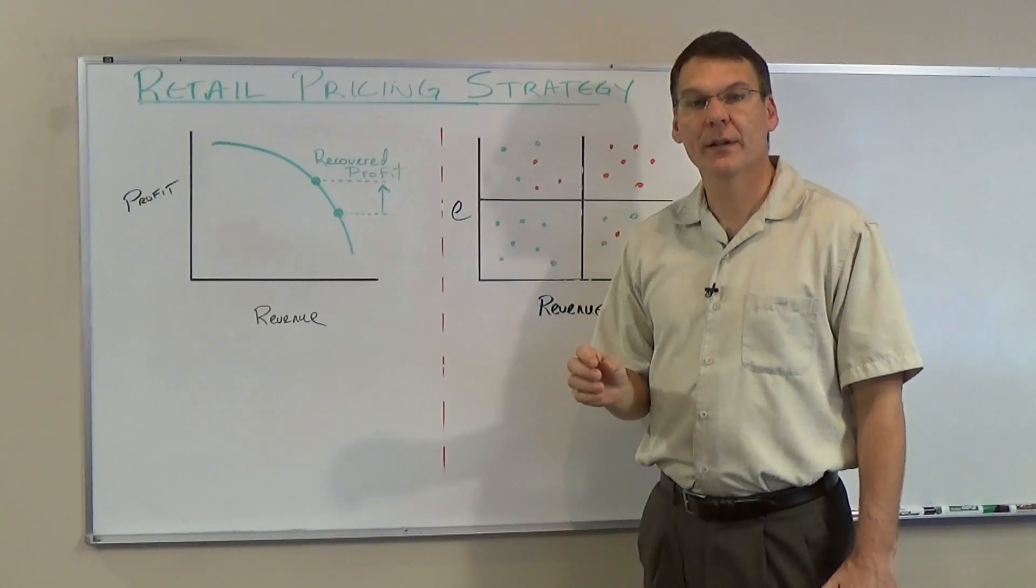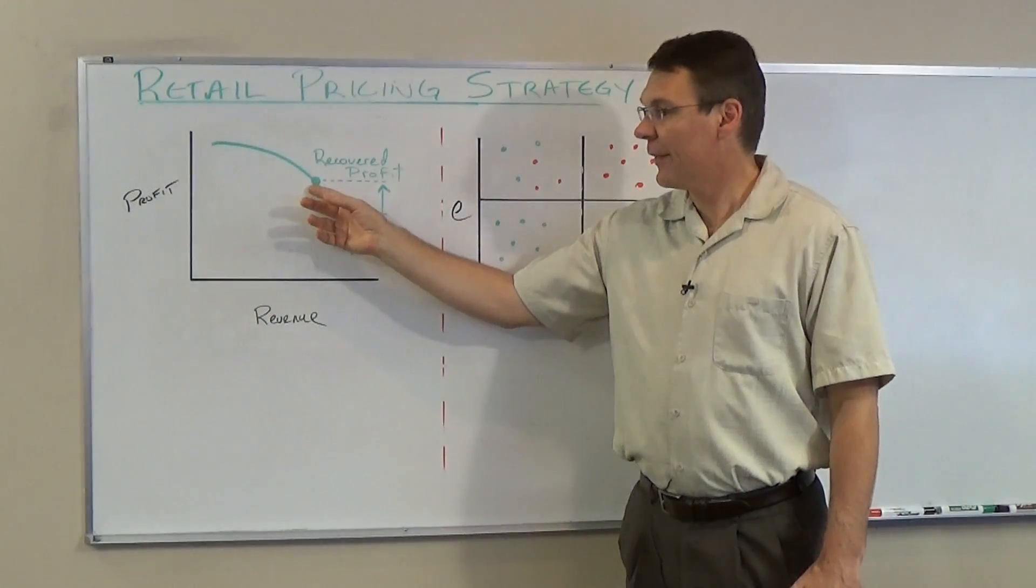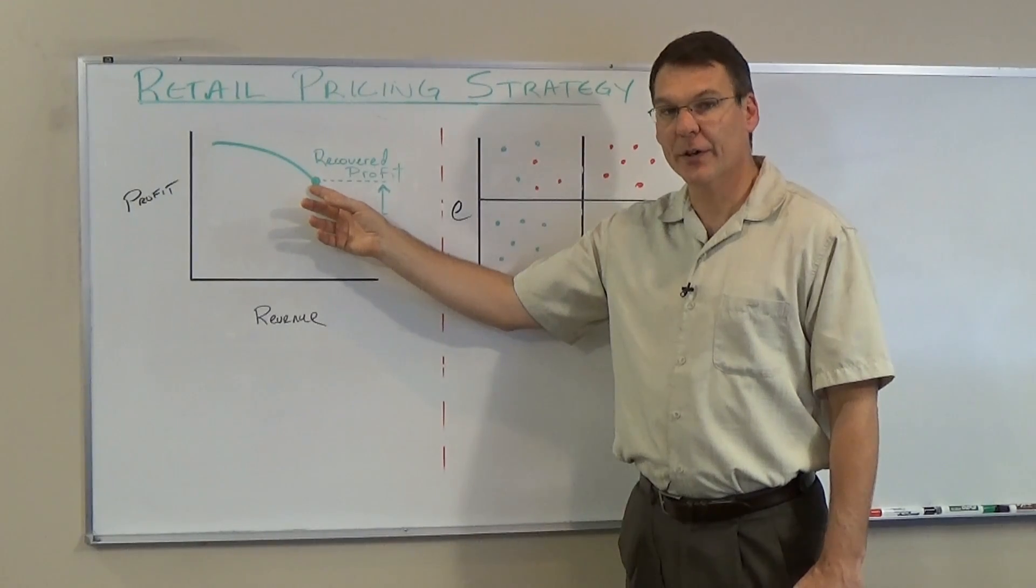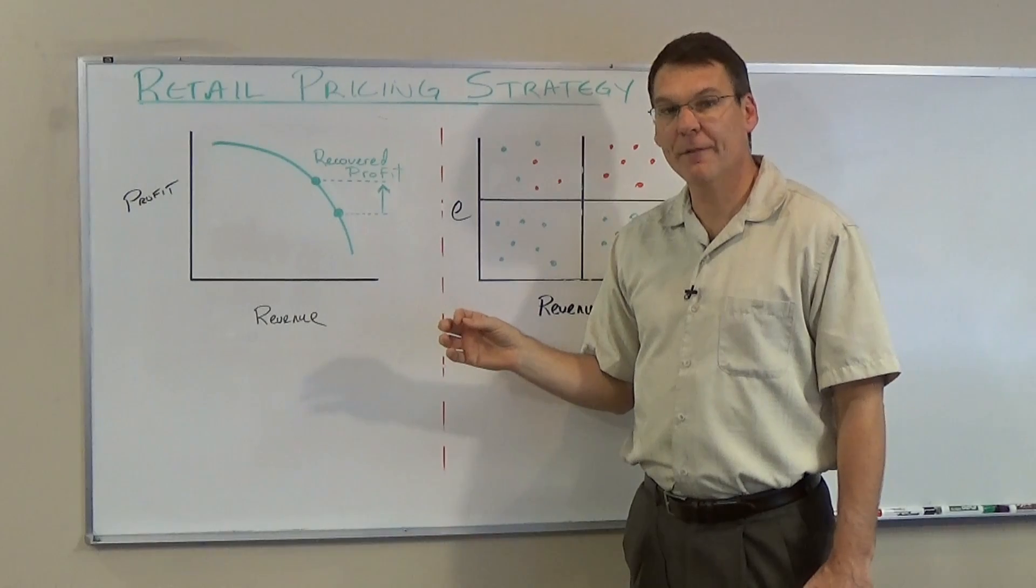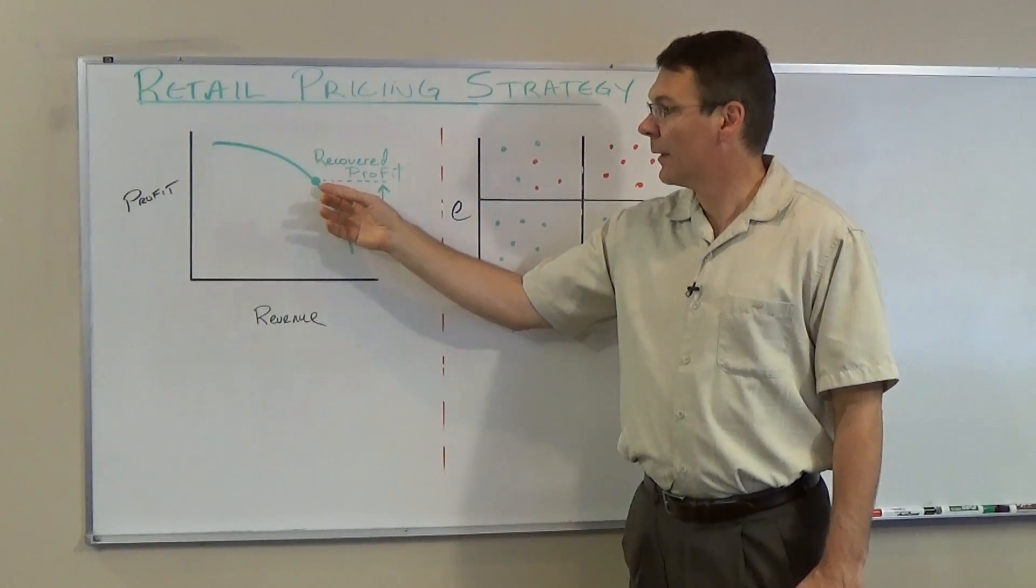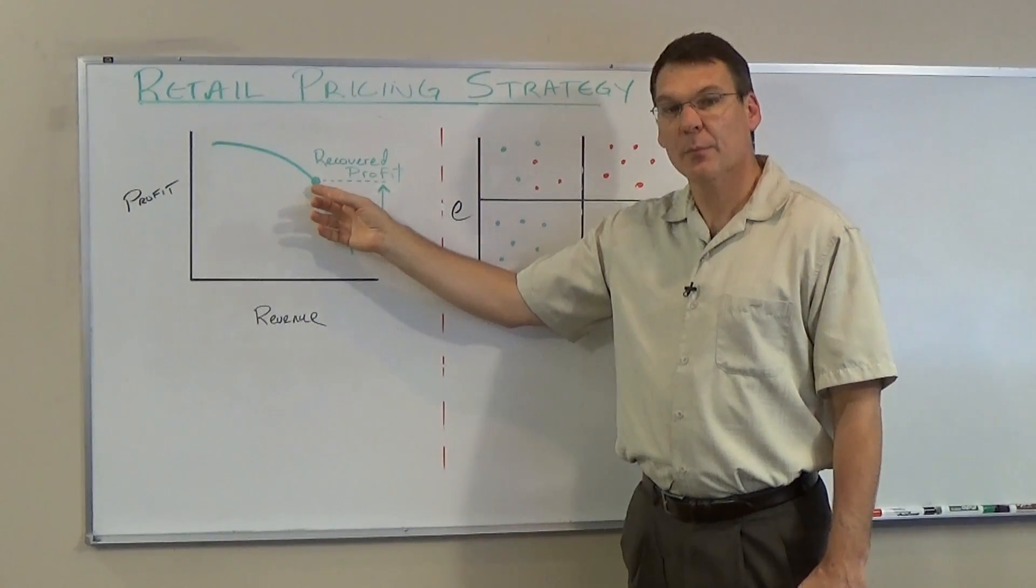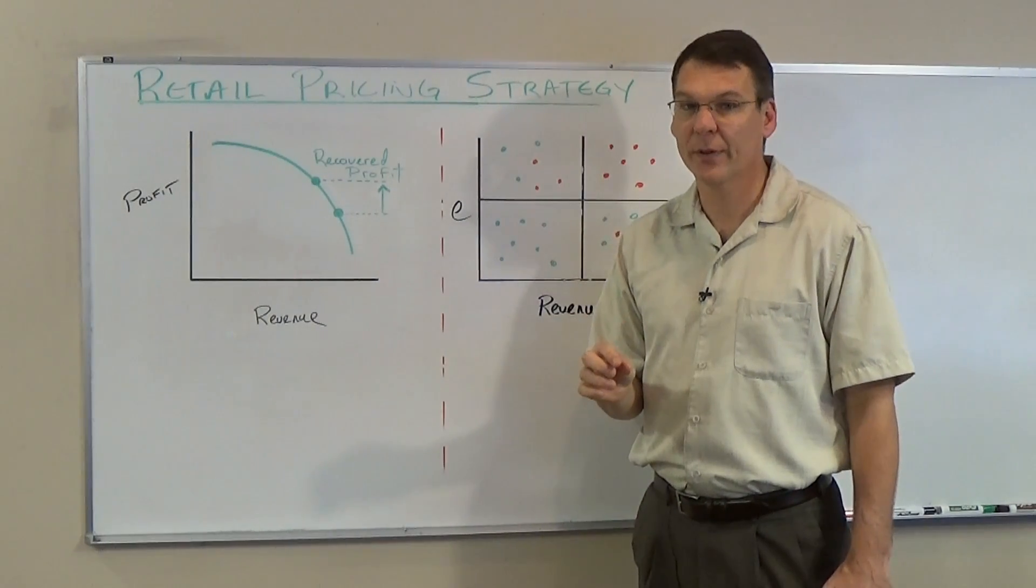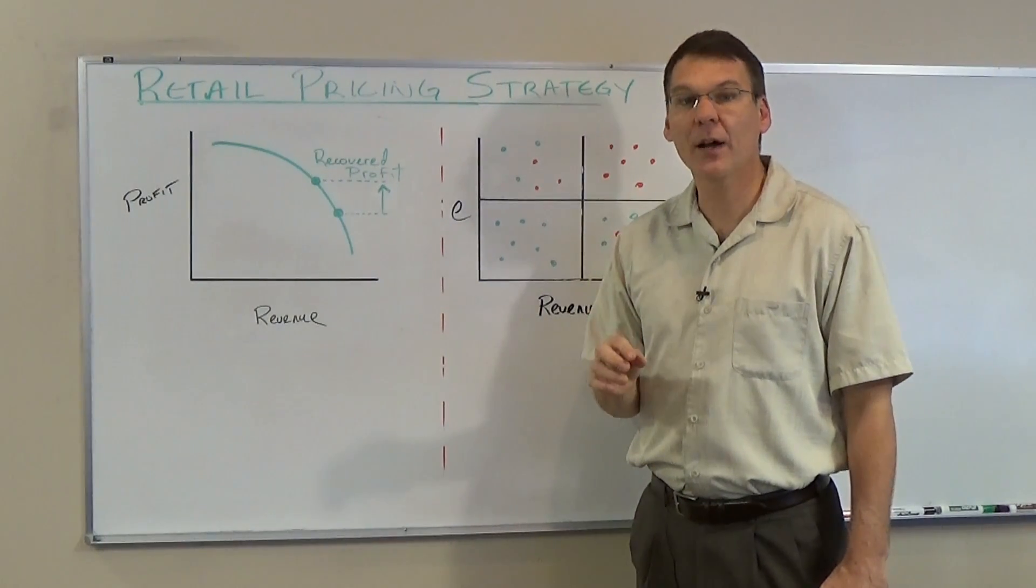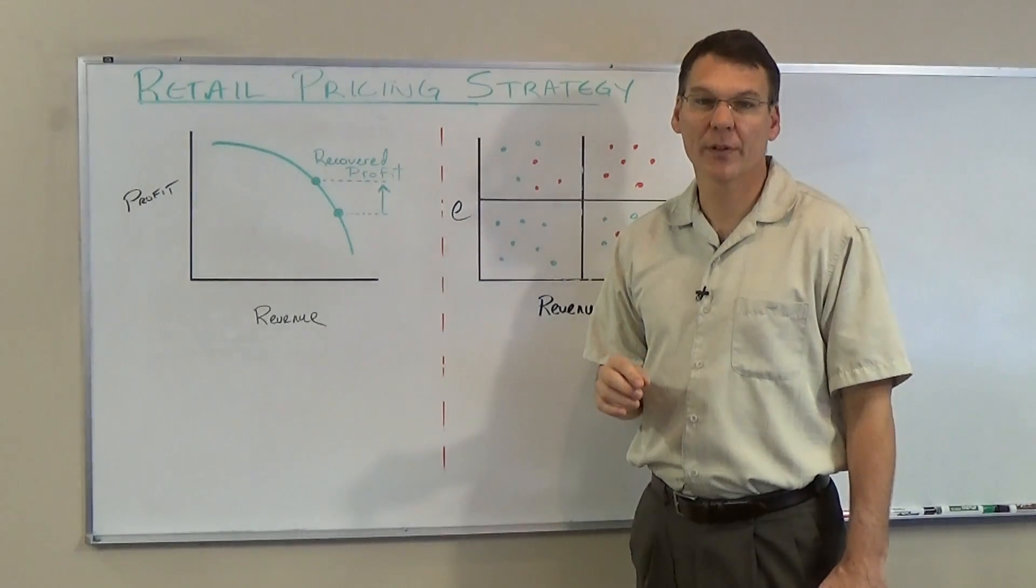The merchant can select the point on the opportunity curve that recovers the lost profit. The prices and products associated with that point are the best for recovering lost profit due to cost increases.